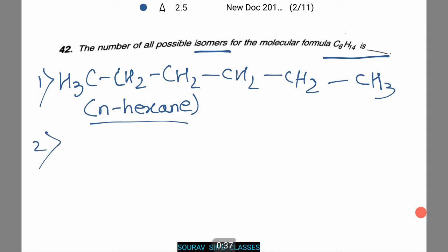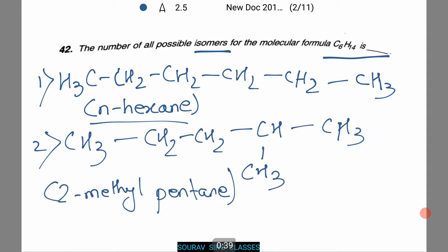The next isomer will be CH3, CH2, CH2, CH with 2CH3 on its side chain. This is also known as 2-methylpentane.